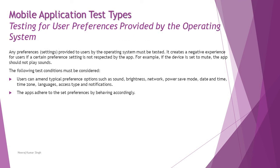Next, we have testing for user preferences provided by the operating system. Any preferences and settings provided by the OS must be tested. If your app has any interaction with these settings, it must abide by them — for example, muting your phone, reducing notification volume, or turning off music. It creates a negative experience if a preference setting is not respected by the app. For example, if the device is set to mute, the app should not play any sounds.